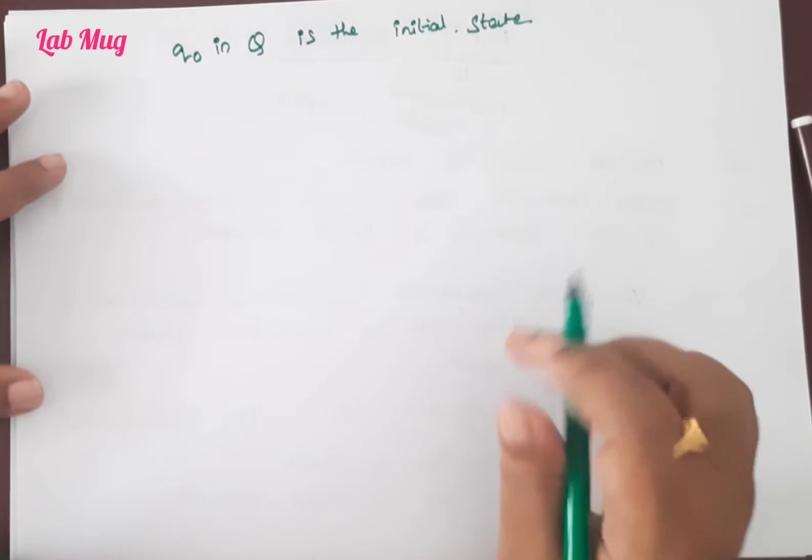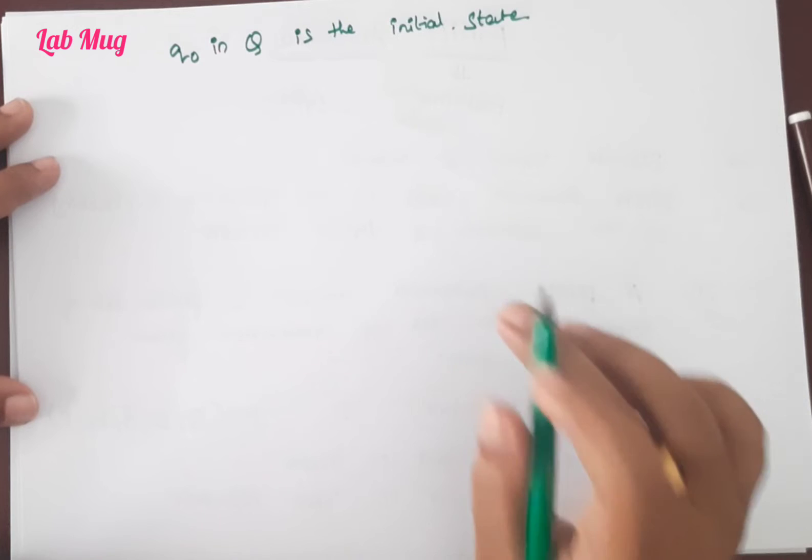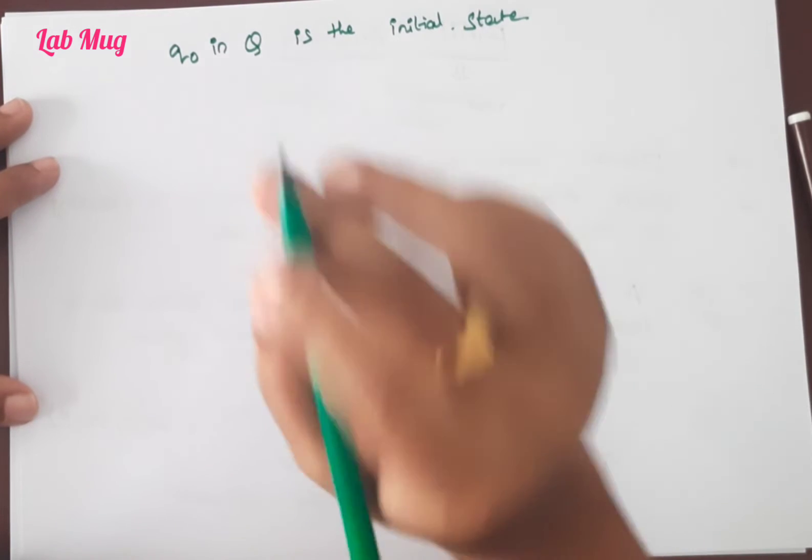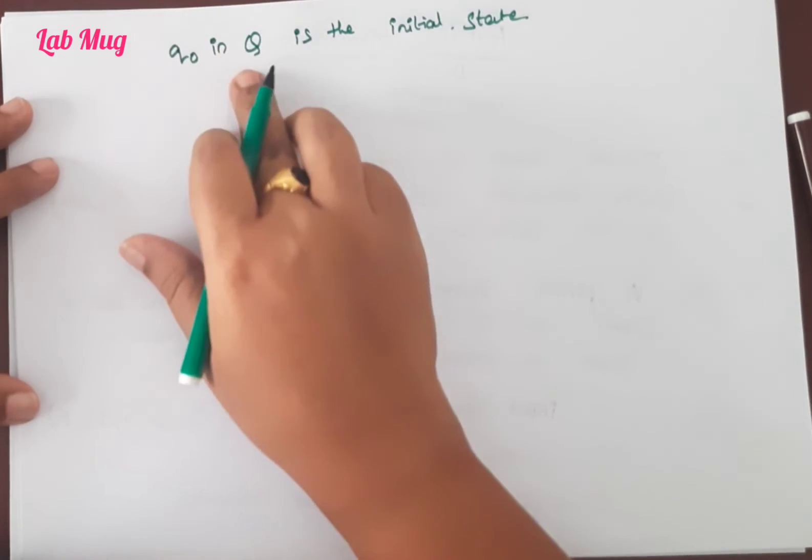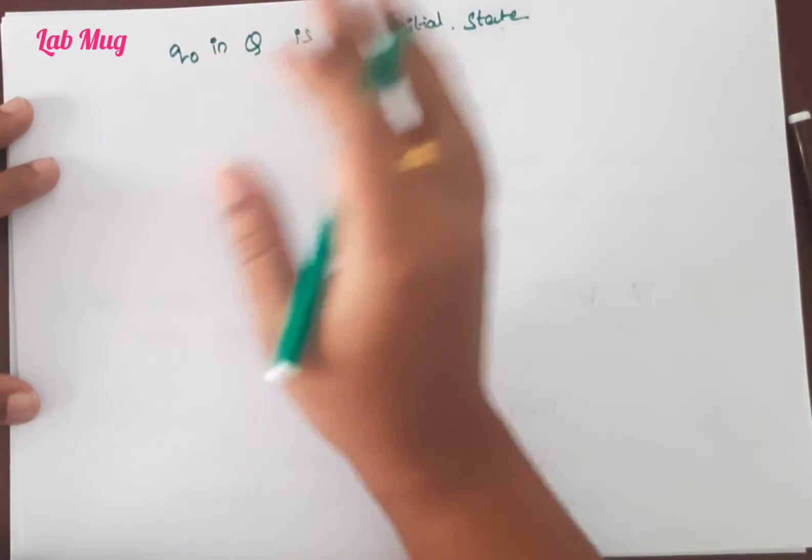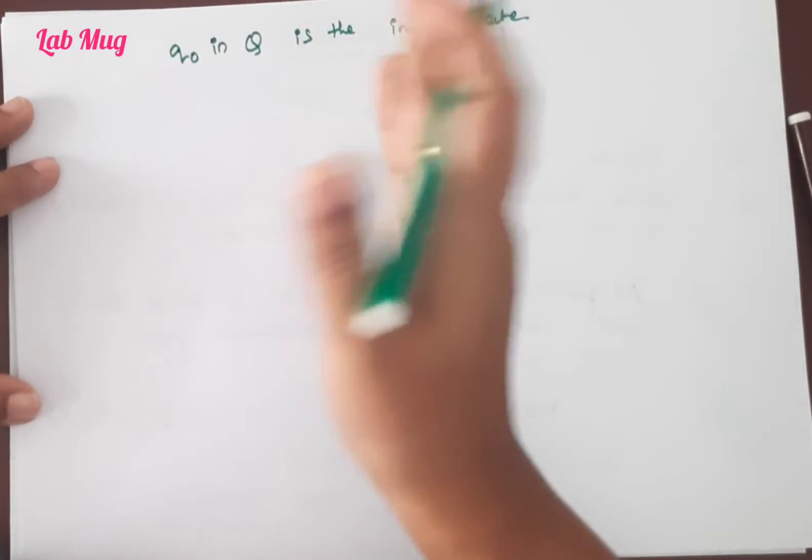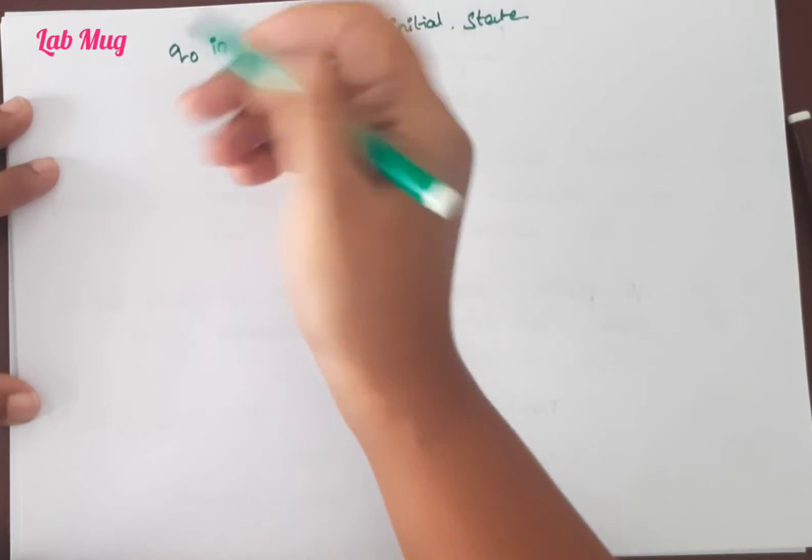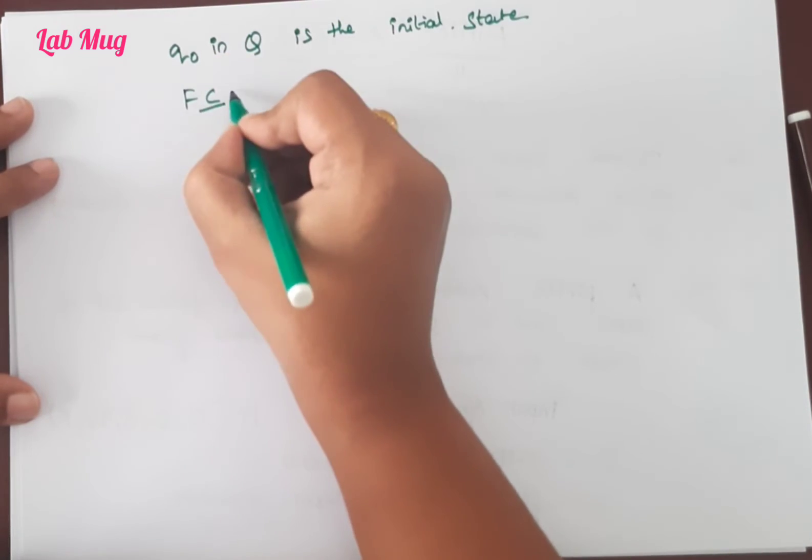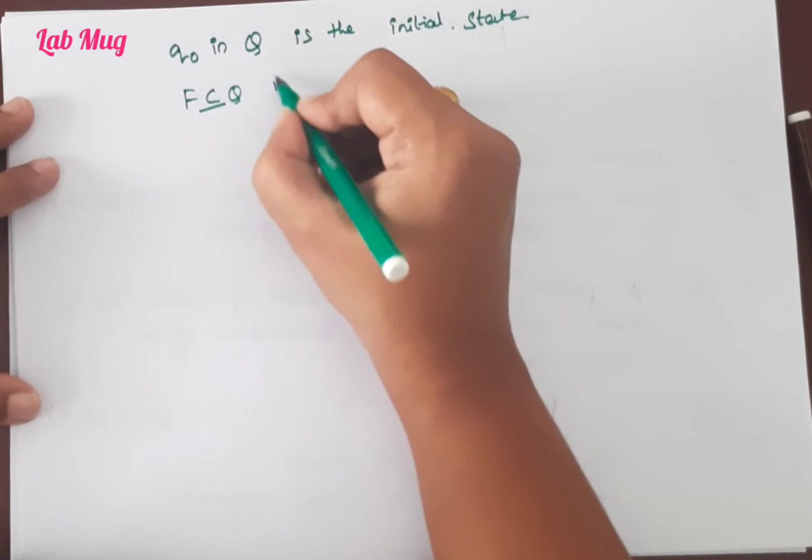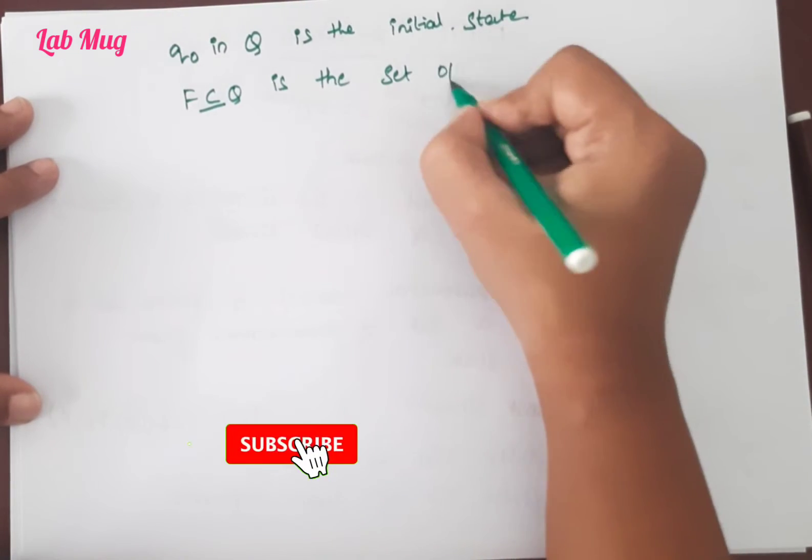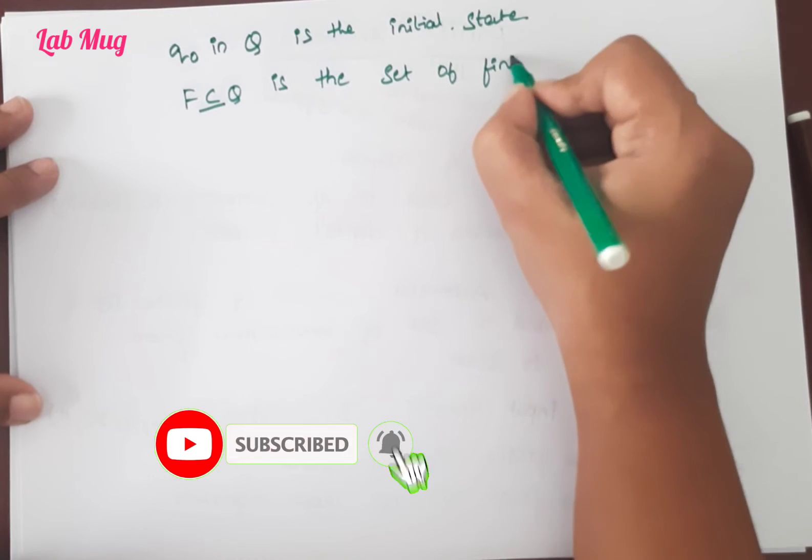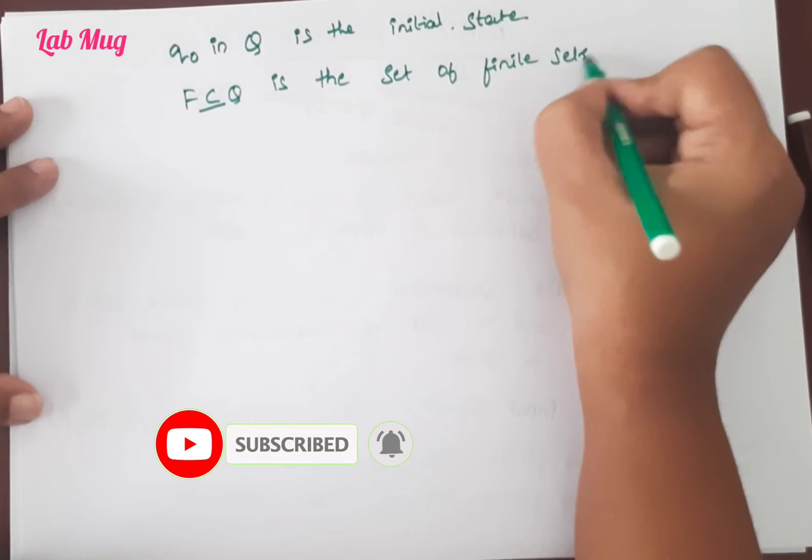Next, after q₀, we take F. What is F? Again, finite sets. Here we took Q. This is also subset or equal to Q. From that we take a subset and form it. So F ⊆ Q is the set of finite states.